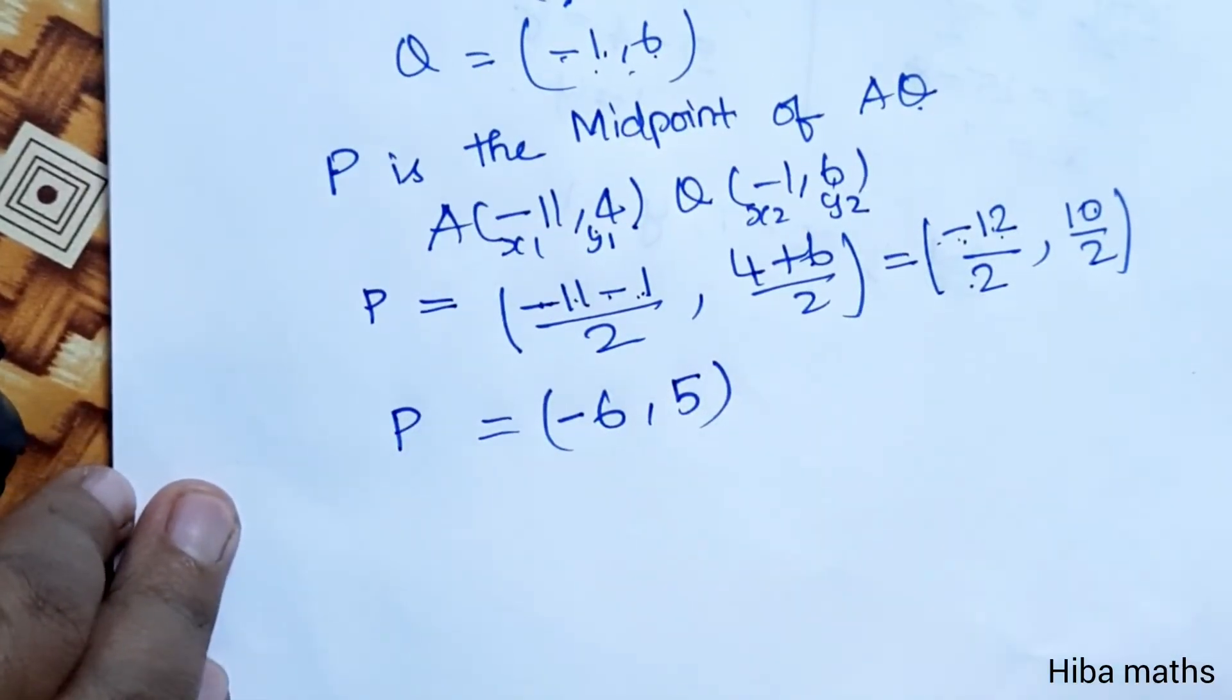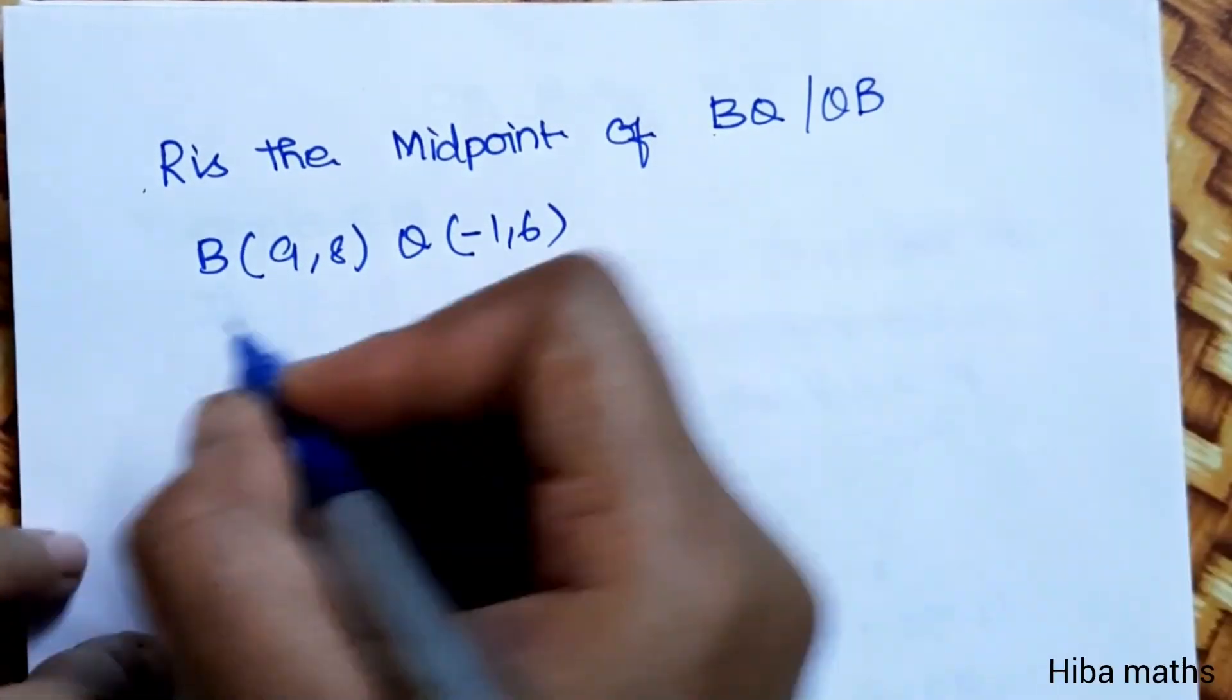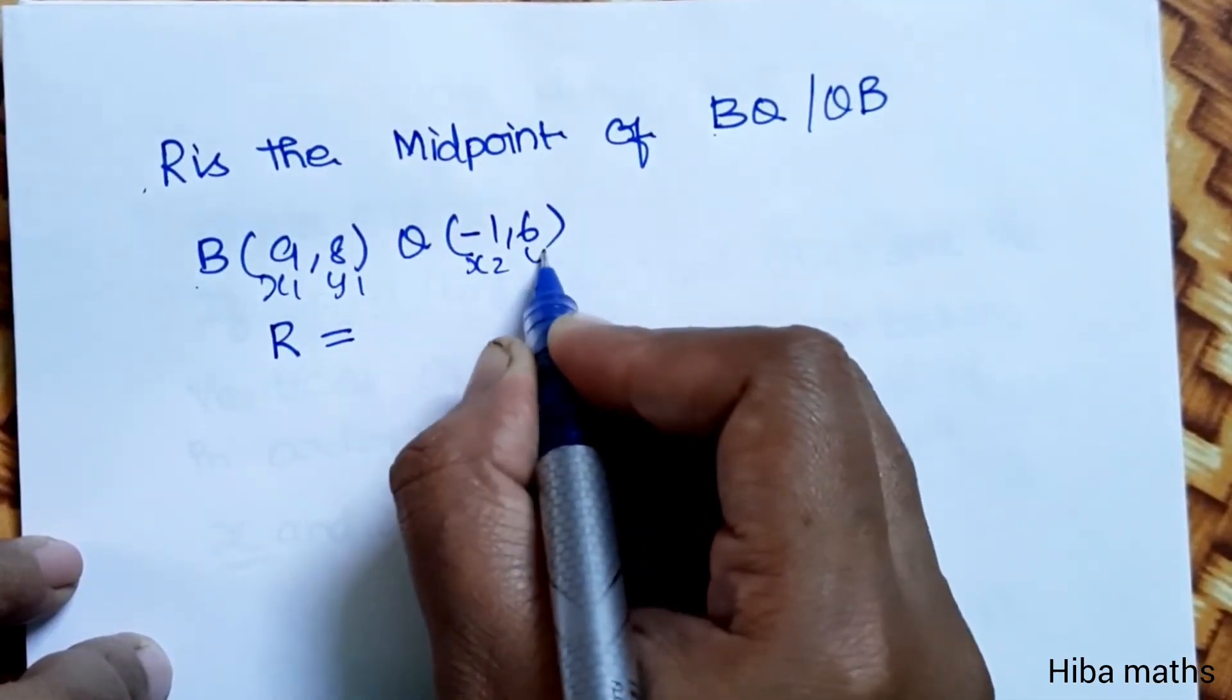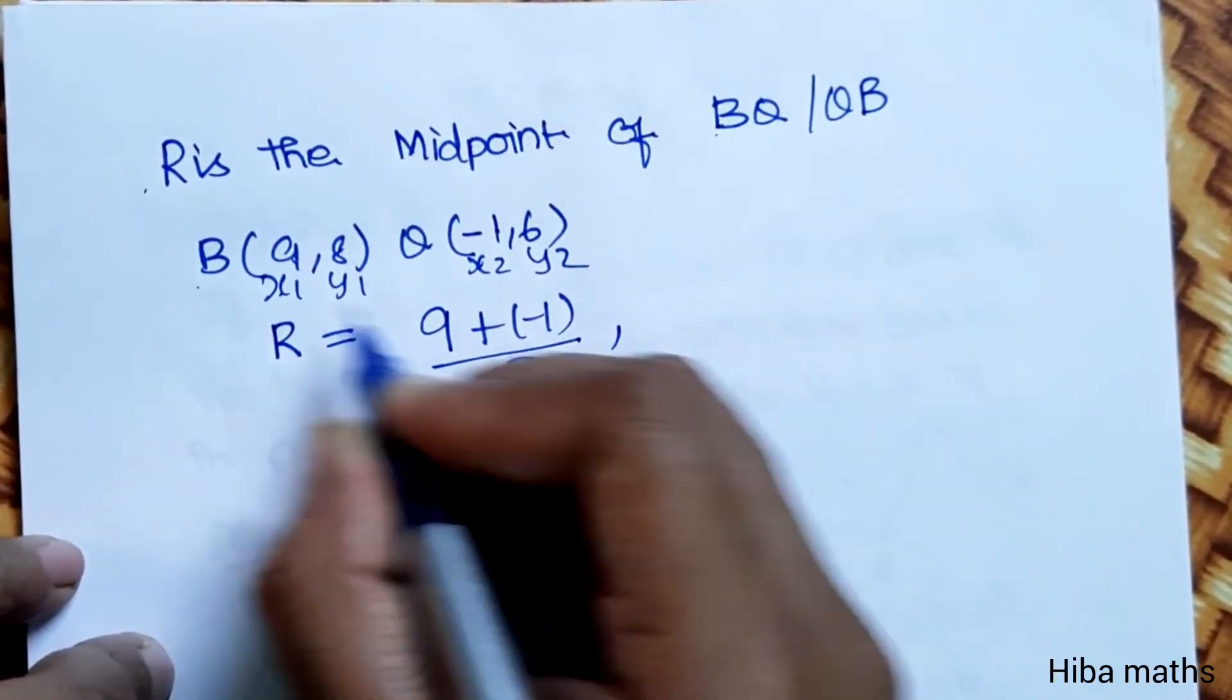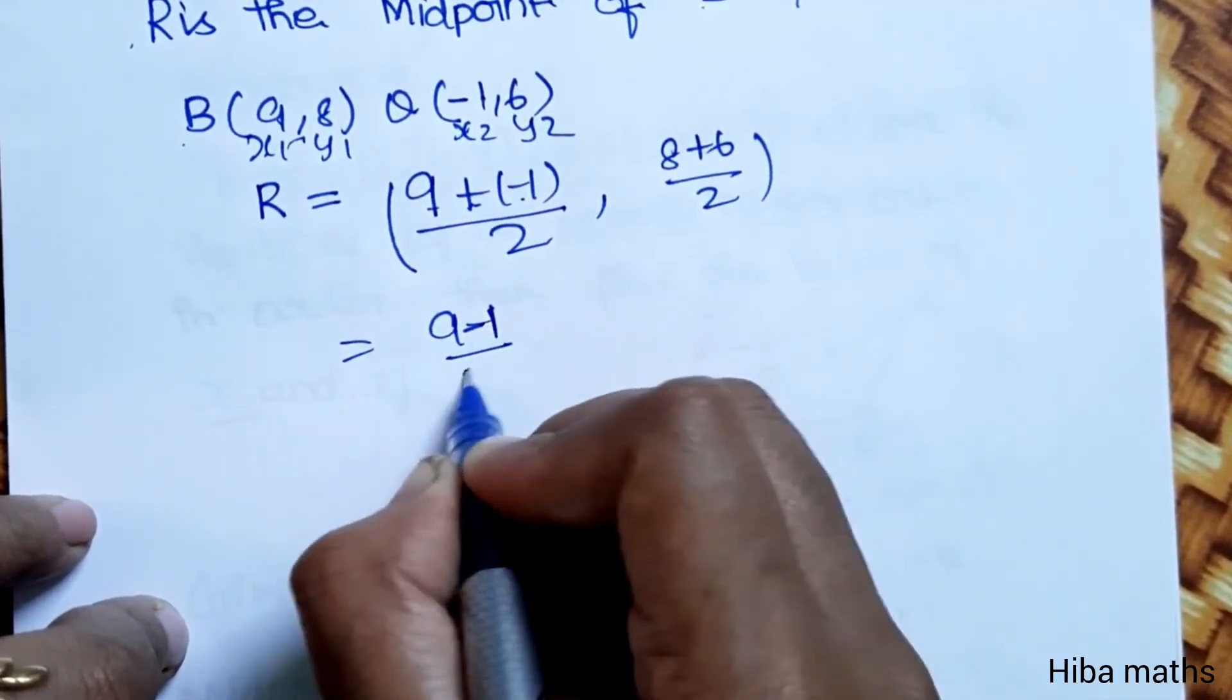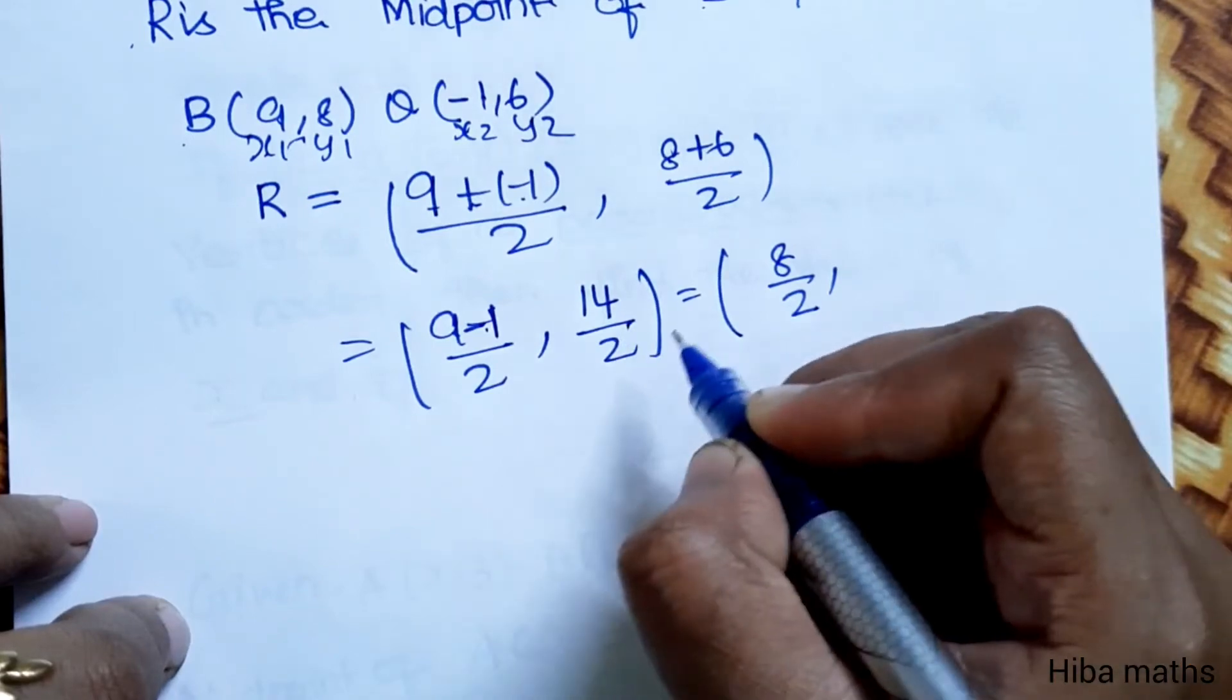R is the midpoint of QB. x₁, y₁, x₂, y₂. (9 + (-1))/2, (8 + 6)/2. 9 - 1 = 8, 8 by 2 = 4. 8 + 6 = 14 by 2 = 7. R value is (4, 7).